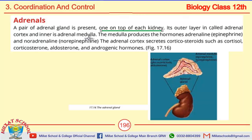What is the function of the adrenal medulla? The adrenal medulla produces two types of hormones: one is adrenalin and the second is noradrenalin. The cortex produces 4 types of hormones: corticosterone, cortisol, aldosterone, and androgenic hormones.